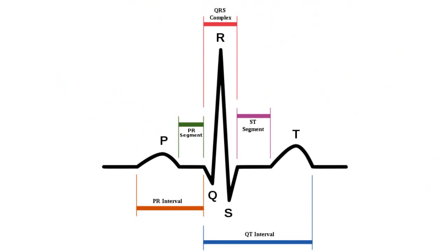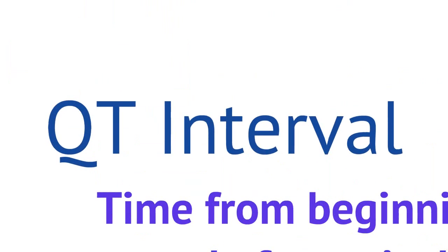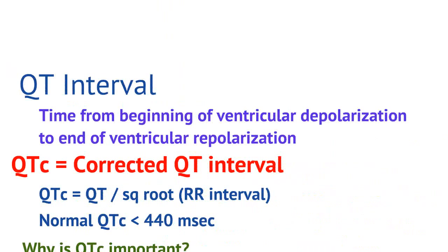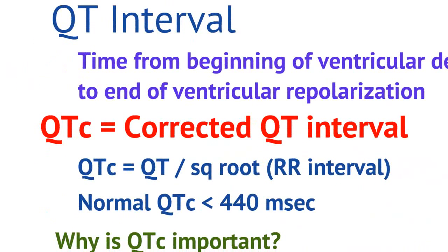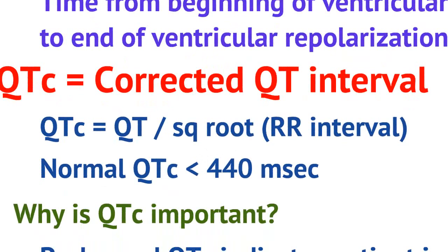Now let's look at the QT interval. The QT interval ranges from the beginning of the QRS complex to the end of the T-wave. It represents the time from the beginning of ventricular depolarization to the end of ventricular repolarization. Note that the QT interval depends on heart rate — if something is driving your heart to beat very fast, the time from depolarization to repolarization has to shorten to maintain that rate. So we need to correct the QT interval for heart rate by calculating the QTc, or corrected QT interval. The QTc is calculated by the QT interval divided by the square root of the RR interval.